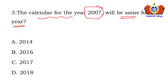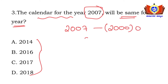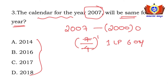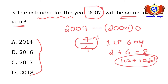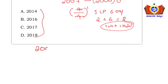Moving to the next question: the calendar for the year 2007 will be same for which year? We know that till year 2000 there are zero odd days. For the remaining 7 years, dividing by 4 gives 1 leap year and 6 ordinary years — that is 2 plus 6 equals 8 odd days, which is 1 week plus 1 odd day. So for 2007 there is 1 odd day.